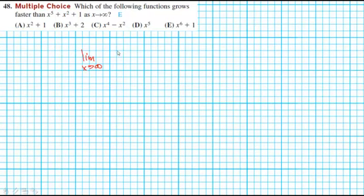If I were to put x to the fifth over x squared plus one over any of these, and I want this to go to zero because it's faster, well, the only one that makes that happen is x to the sixth plus one. As I evaluate this limit, remember that this part isn't going to matter.